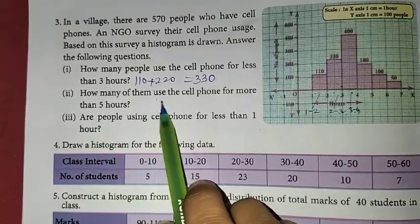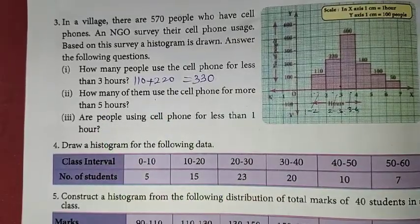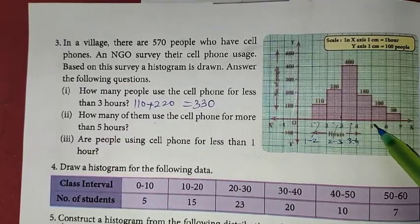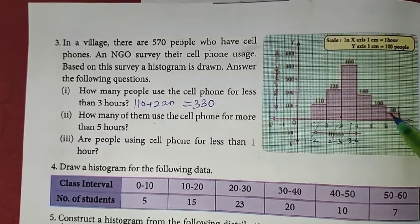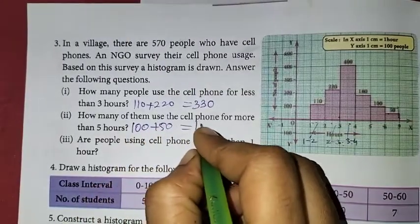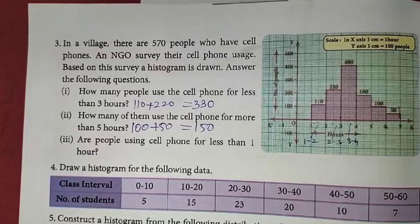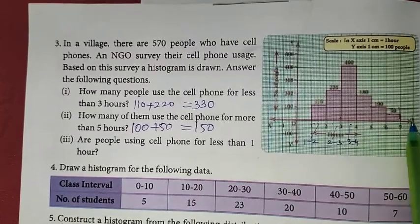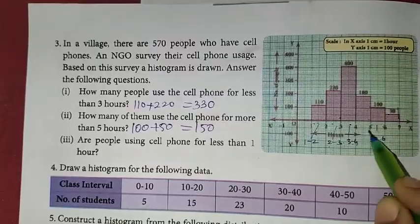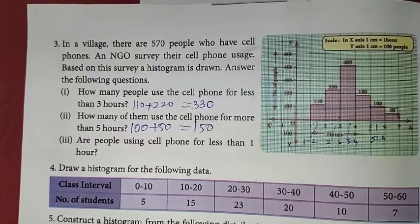How many of them use the cell phone for more than 5 hours? 5 to 6, 6 to 7, 100 plus 50 is nothing but 150. More than 5 hours, 5 has to be here. So if you have this bar in 5 to 6, it will be correct. 5 is included, more than 5 hours.